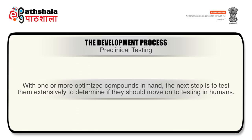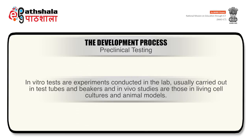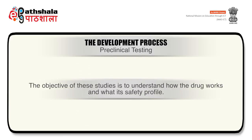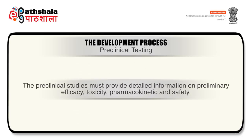With one or more optimized compounds in hand, the next step is to test them extensively to determine if they should move on to testing in humans — these studies are called pre-clinical studies. Pre-clinical testing involves in vitro and in vivo tests. In vitro tests are experiments conducted in the lab, usually carried out in test tubes and beakers, and in vivo studies are those in living cell cultures and animal models. The objective of these studies is to understand how the drug works and what its safety profile is. From a regulatory perspective, extremely thorough testing is needed before the candidate drug can be studied in humans. The pre-clinical studies must provide detailed information on preliminary efficacy, toxicity, pharmacokinetics and safety.